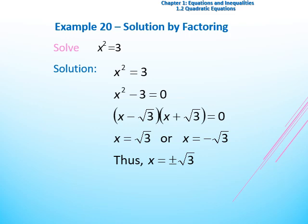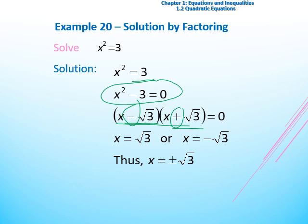The solution by factoring: 4x squared equal to 3. After adding negative 3 to both sides, we apply the difference of squares rule to get two brackets: (x minus root 3) times (x plus root 3) equal to 0. If x minus root 3 equals 0, then x equals root 3. If x plus root 3 equals 0, then x equals negative root 3.